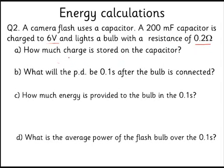The charge stored in the capacitor, again fairly straightforward calculation, just Q = CV gives us 1.2 coulombs. What will the PD be 0.1 seconds after the bulb is connected? Well, we've got to do our discharge equation.